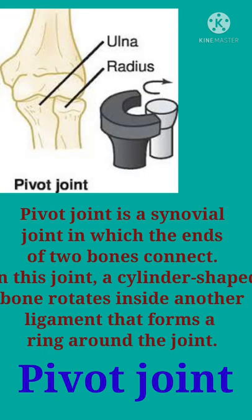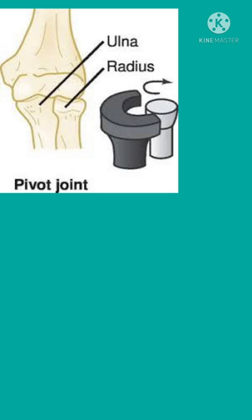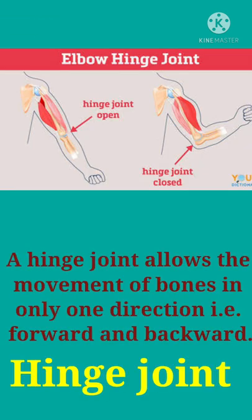Another is the pivot joint, which is a synovial joint in which the ends of two bones connect. In this joint, a cylindrical bone rotates inside another ligament that forms a ring around the bone. Next is the hinge joint.